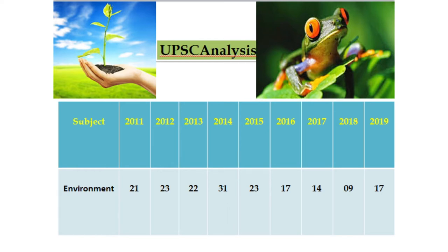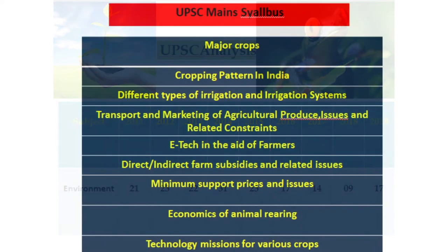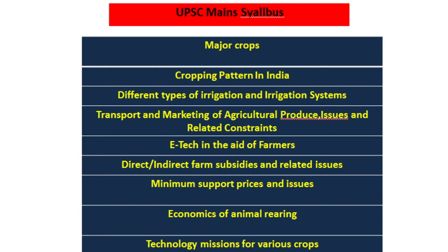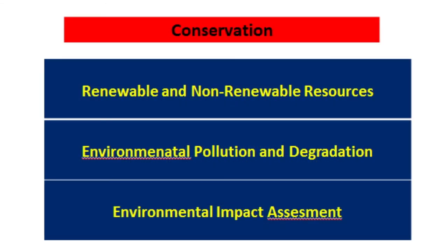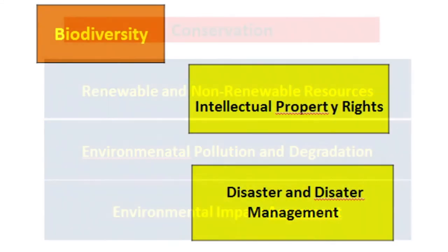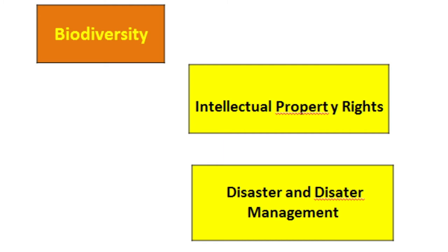This subject is the backbone of the UPSC Civil Services Examination. The Main Syllabus includes Major Crops, Cropping Patterns in India, Different Types of Irrigation, Transport and Marketing of Agricultural Produce, E-Technology for Farmers, Farm Subsidies, Minimum Support Prices, Economics of Animal Rearing, Technology Mission for Various Crops, Conservation, Renewable and Non-Renewable Resources, Environmental Pollution and Degradation, Environmental Impact Assessment. The third and most scoring topic is Biodiversity, which includes Intellectual Property Rights and Disaster Management.